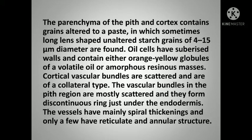The parenchyma of the pith and cortex contains starch grains altered to a paste, in which sometimes elongated lance-shaped unaltered starch grains are also found. Oil cells have suberized walls and contain either orange-yellow globules of volatile oil or amorphous resinous masses.